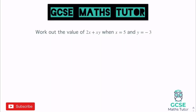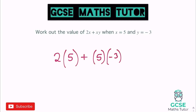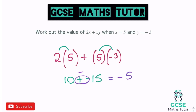Now let's work out the value of 2x + xy when x is 5 and y is negative 3. We sub things in: 2 lots of 5, add xy which means x times y — so 5 multiplied by negative 3, which I'll write as 5 lots of negative 3 in a bracket. Working this out: 2 times 5 is 10, add 5 lots of negative 3 is negative 15.